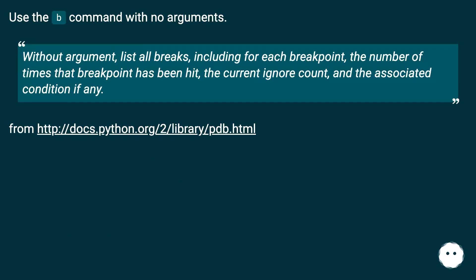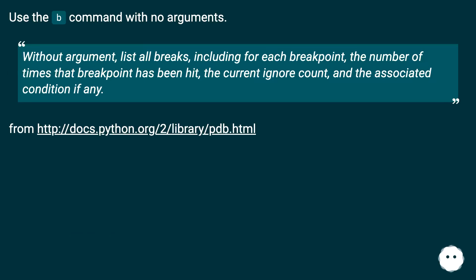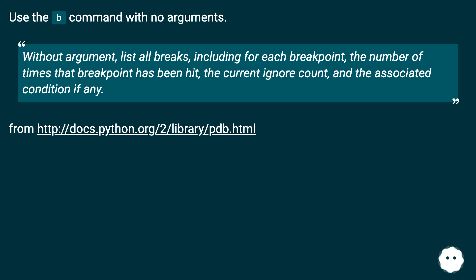Use the b command with no arguments. Without an argument, it lists all breaks, including for each breakpoint the number of times that breakpoint has been hit, the current ignore count, and the associated condition, if any.